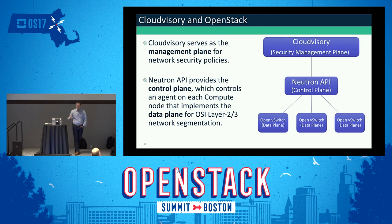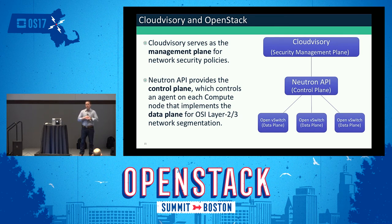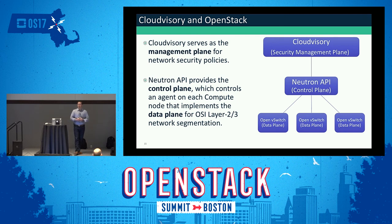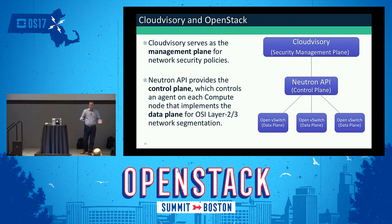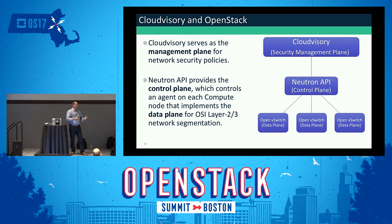The good news is we found a solution and worked very closely with a company called Cloudvisory for over a year. They provide a 100% software-based solution that works at what we call the security management plane. It interacts directly with the Neutron API, which continues to be the control plane, so we keep the cloud-native security controls in place. It also extends the functionality you'd get from Neutron by abstracting away complexity and error-proneness, providing the ability to monitor and audit the whole environment in near real-time, and allowing you to set controls to remediate changes.